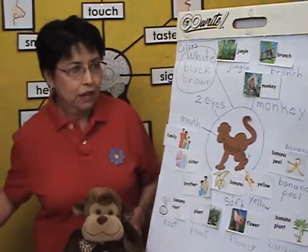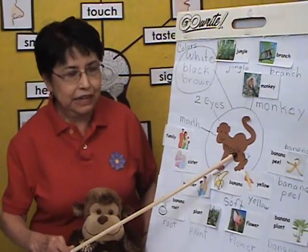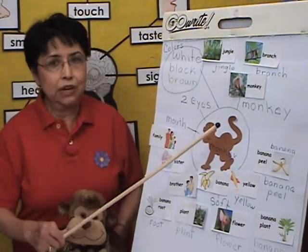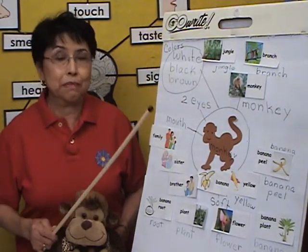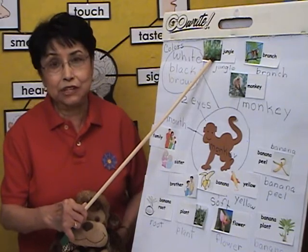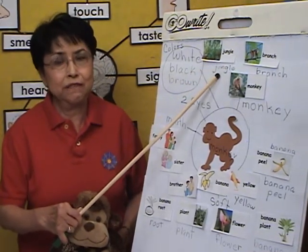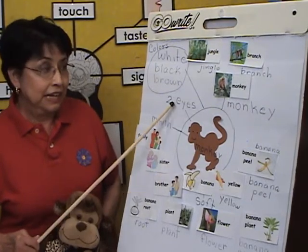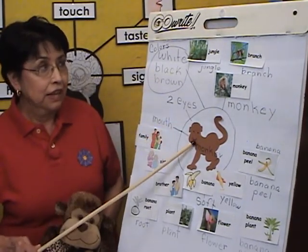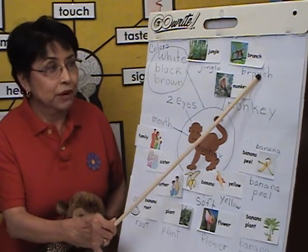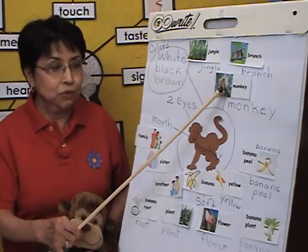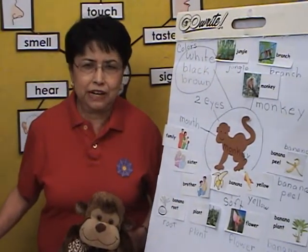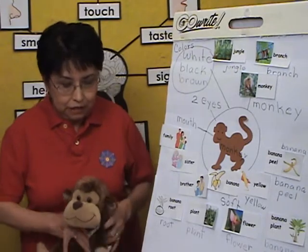Let's review. This is a monkey, so I'm going to highlight key words. My goal is for children to identify the pictures, identify the words, and some children are even reading. I would say: tell me something about Chiki. He's a monkey. He has two eyes, a mouth. He lives in the jungle. He likes to get on branches. The monkey likes to eat bananas.